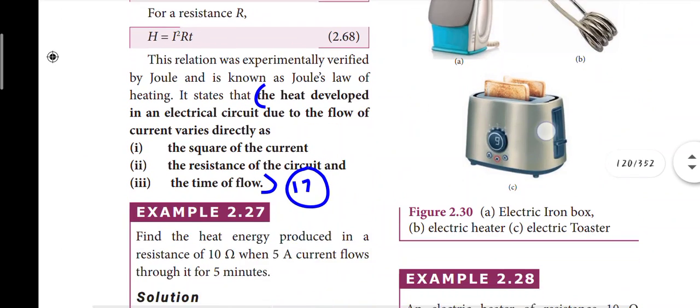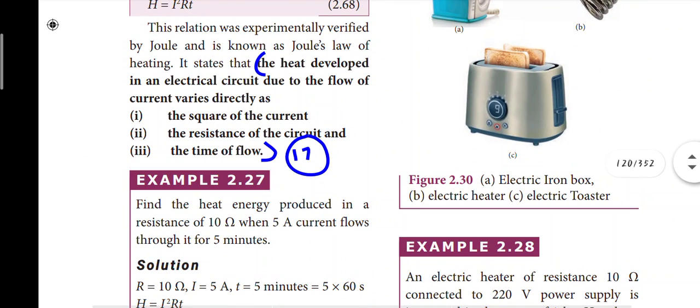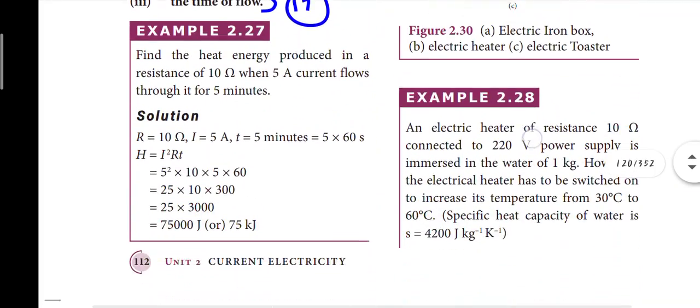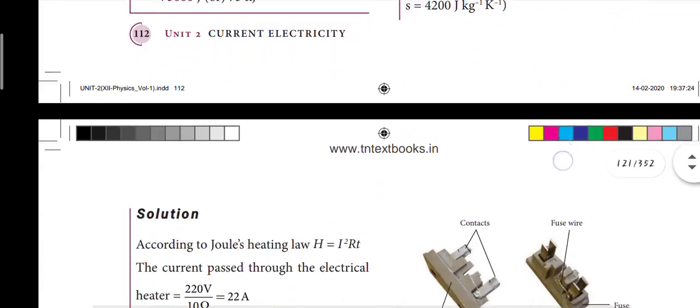Next, Joule's law - the 17th question. Joule's law states that heat H = I²RT. The heat generated is directly proportional to the square of the current, the resistance, and the time. This is a straightforward equation - the 17th question.